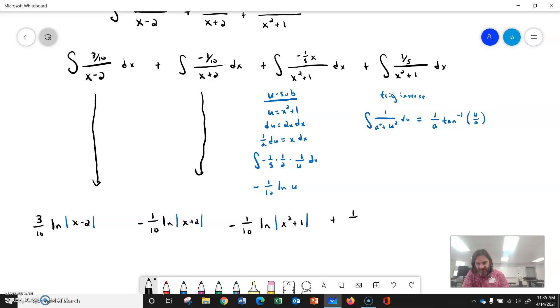because that 1 fifth is just hanging out, a tangent inverse of x. And then there'll be a plus c way out here at the end.